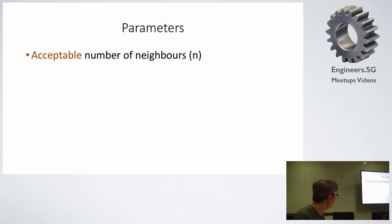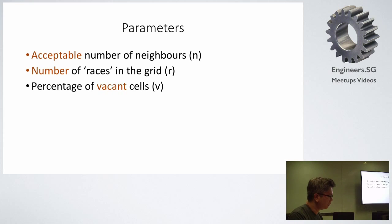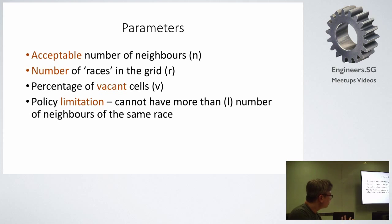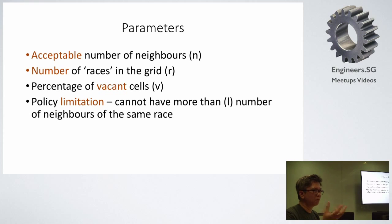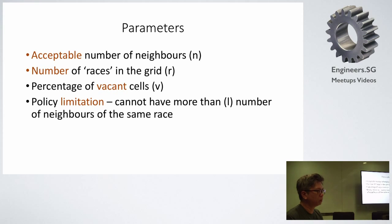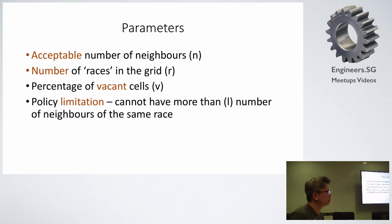The parameters are: N — the acceptable number of same-race neighbors; R — the number of races on the grid; V — the percentage of vacant cells; and a policy limitation on whether to limit the maximum number of same-race neighbors. The larger N is, the more racist you are — small N means you're okay with diversity, large N means you're not. I'm trying to see whether policy limitations help and how racist a preference needs to be to cause segregation.